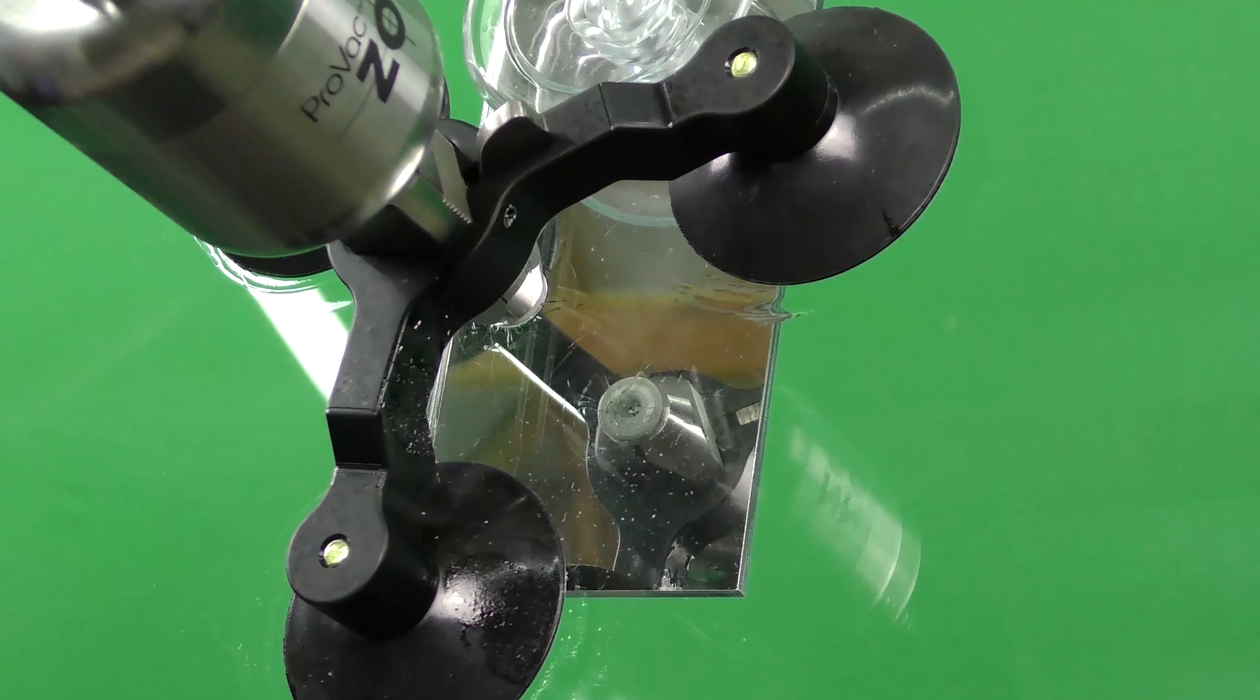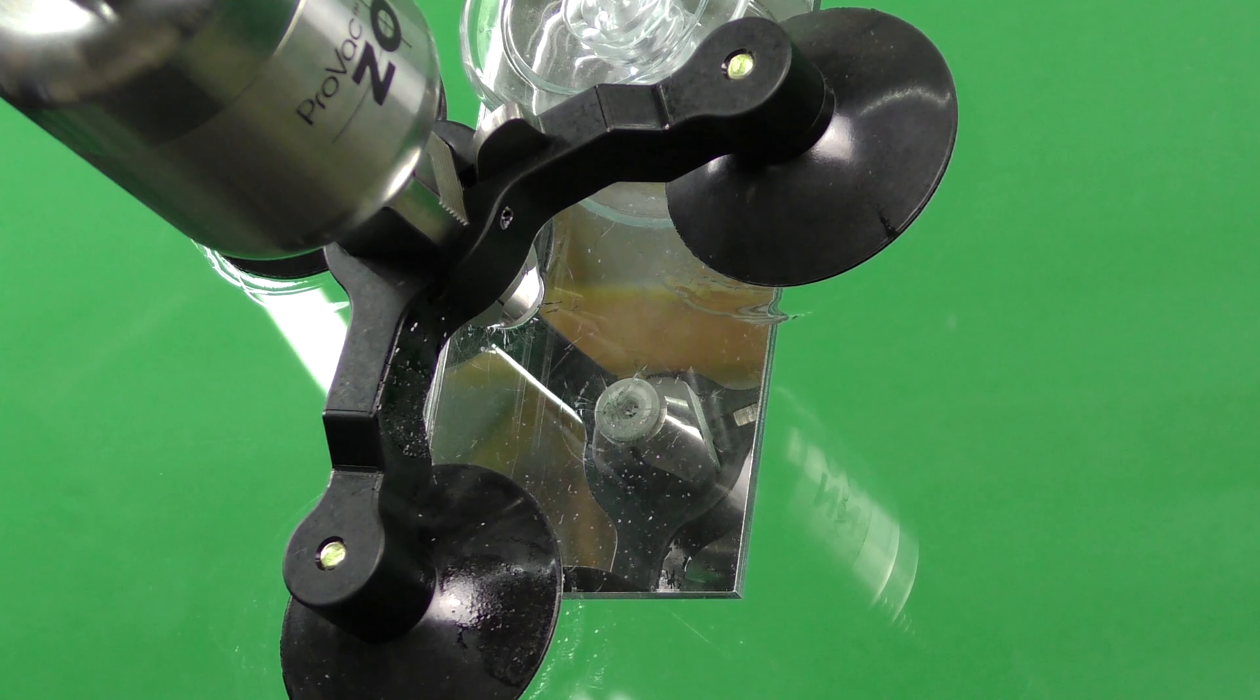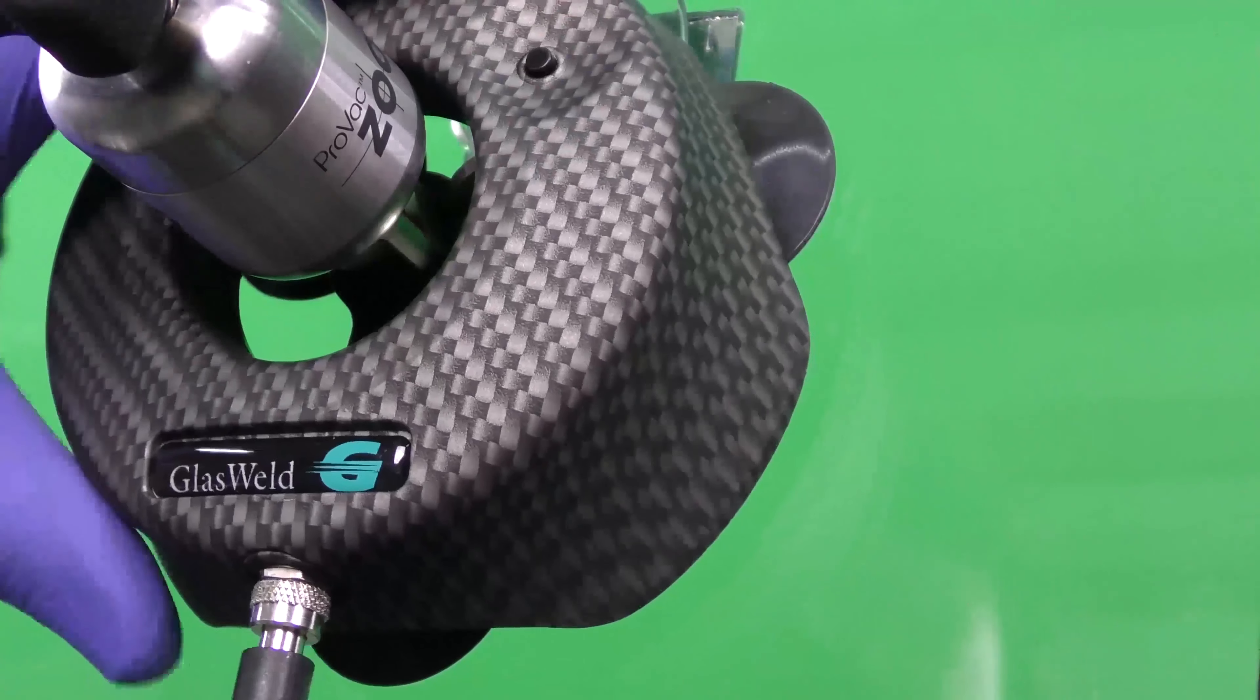After the second vacuum and pressure cycle, you want to use the curing lamp while it's still under pressure.